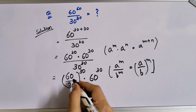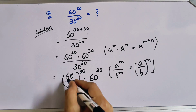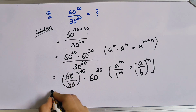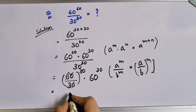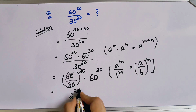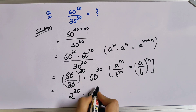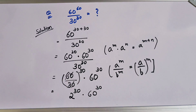60 divided by 30 gives us 2, so this simplifies to 2 to the power 30 multiplied by 60 to the power 30.